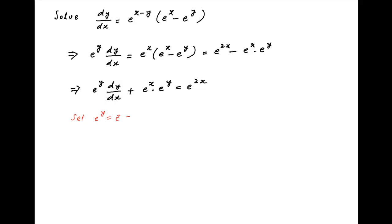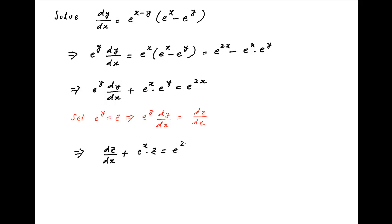Now put e raised to the power y equal to z. Taking the derivative of both sides with respect to x, we get e raised to the power y times dy upon dx is equal to dz upon dx. Therefore, the given differential equation can be written as dz upon dx plus e raised to the power x times z is equal to e raised to the power 2x.